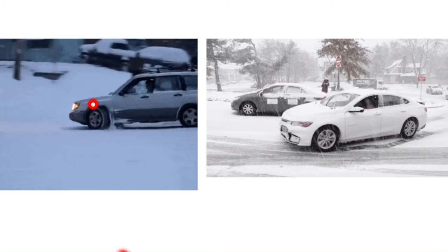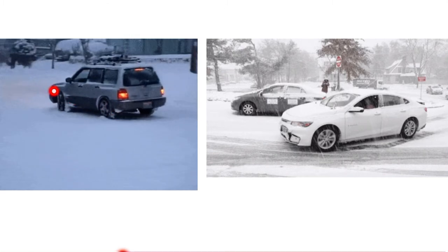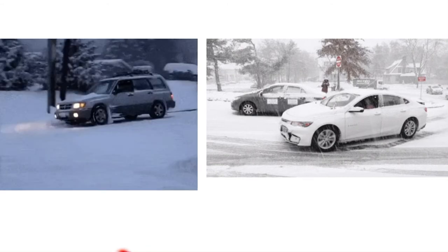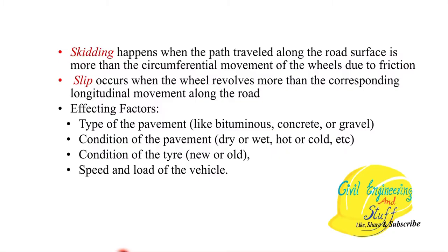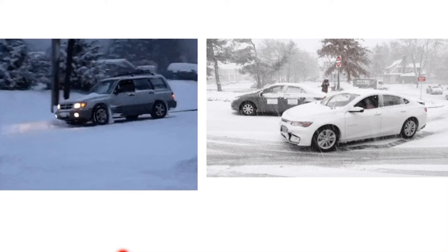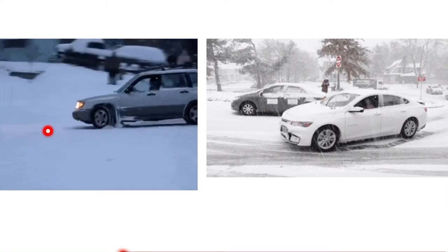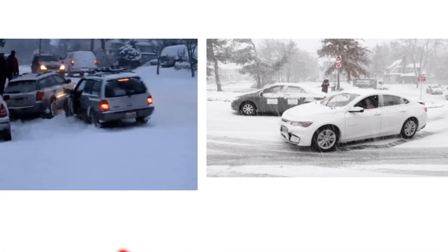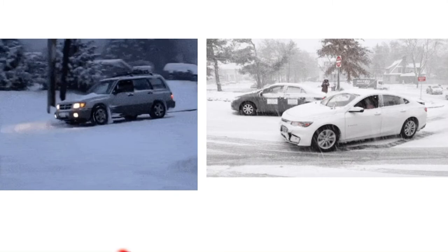Skidding means the tires are not revolving that much but the vehicle is moving in the forward direction. The circumferential movement of the vehicle is fairly less or equal to zero, but the movement in the longitudinal direction of the vehicle is higher. When this phenomenon happens, it is called skidding of the vehicle.